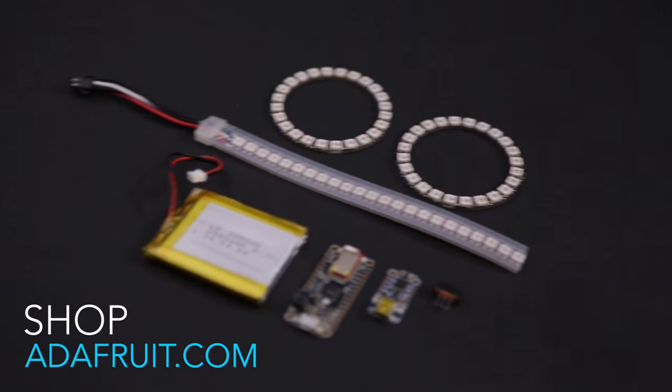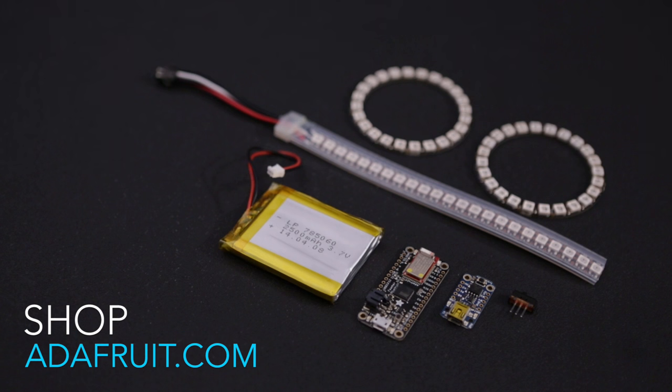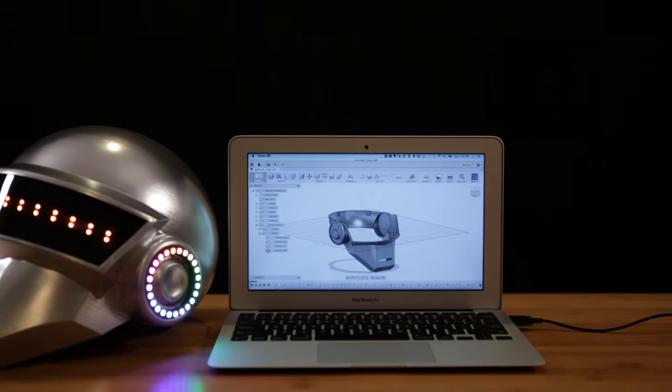You can get the full list of parts and tools used in this project from the link in the description along with the step-by-step tutorial. We modeled it in Fusion 360 and shelled out the helmet so that it's only 2mm thick. It's cut up into three pieces so it's a lot easier to 3D print than just one big piece.